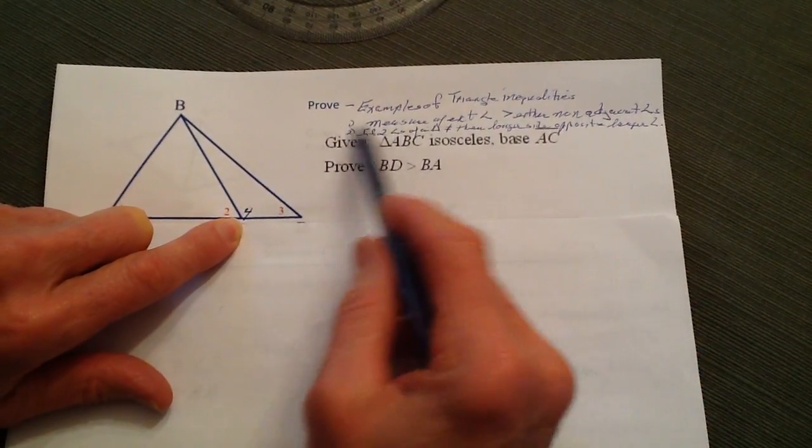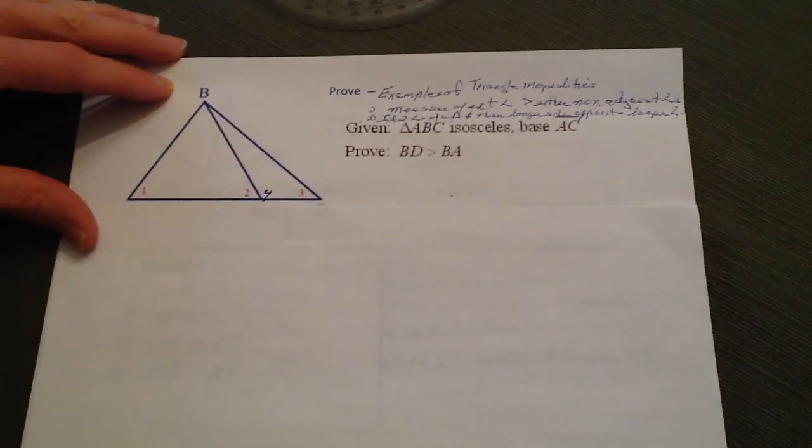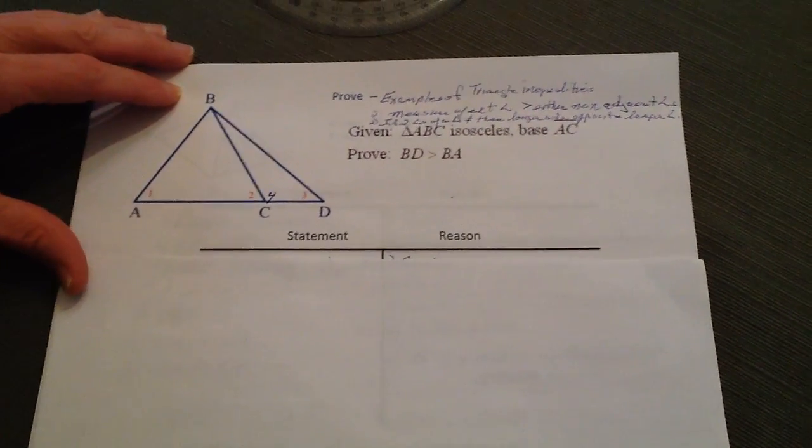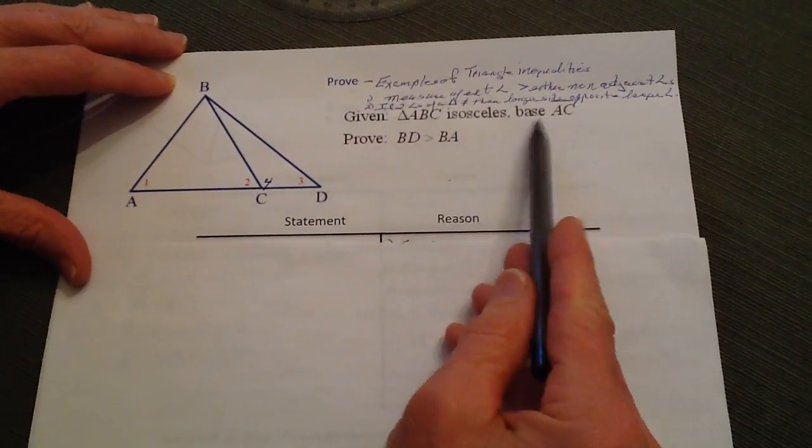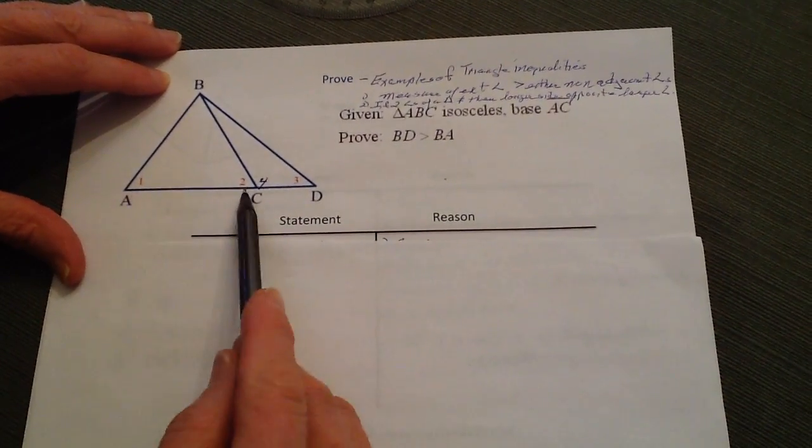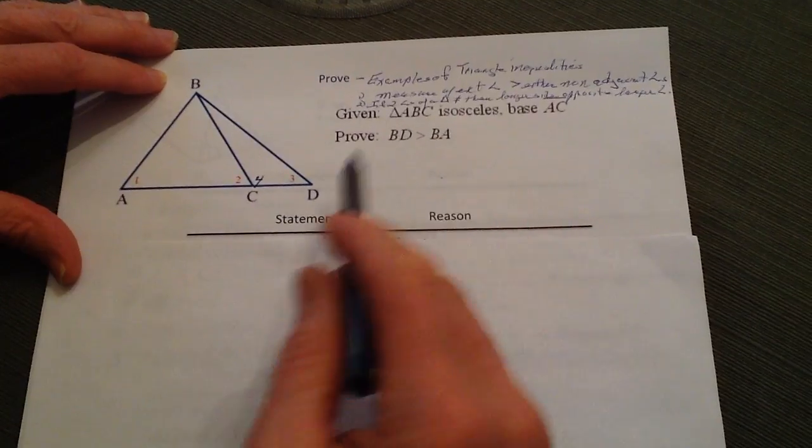So let's go ahead and work with this proof right here where we're given a triangle here of ABC. ABC is an isosceles, and the base is AC. As a consequence,